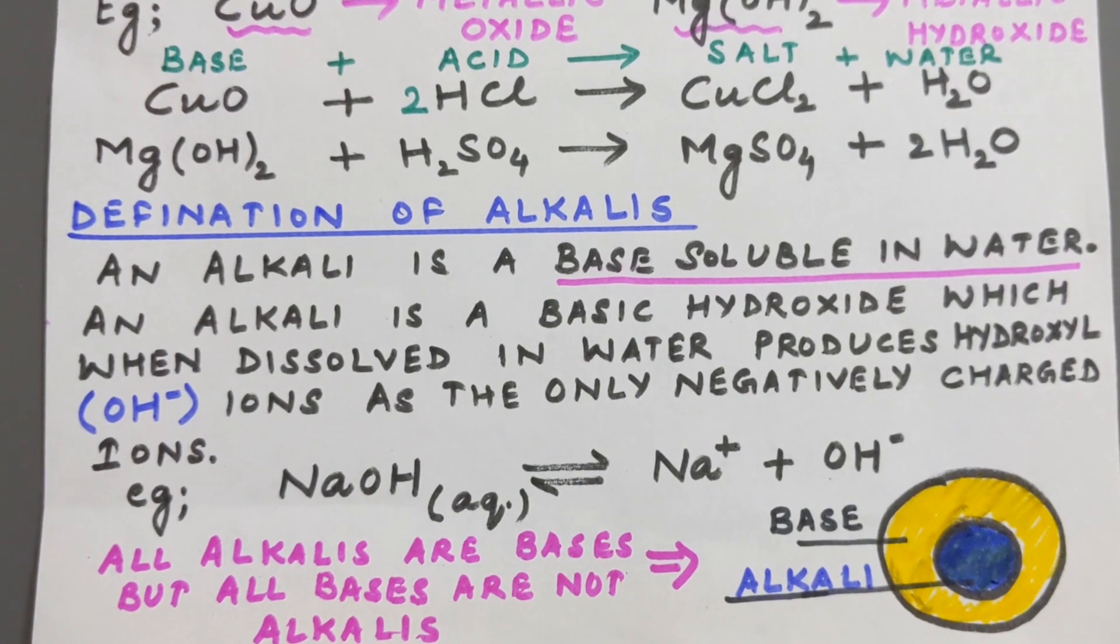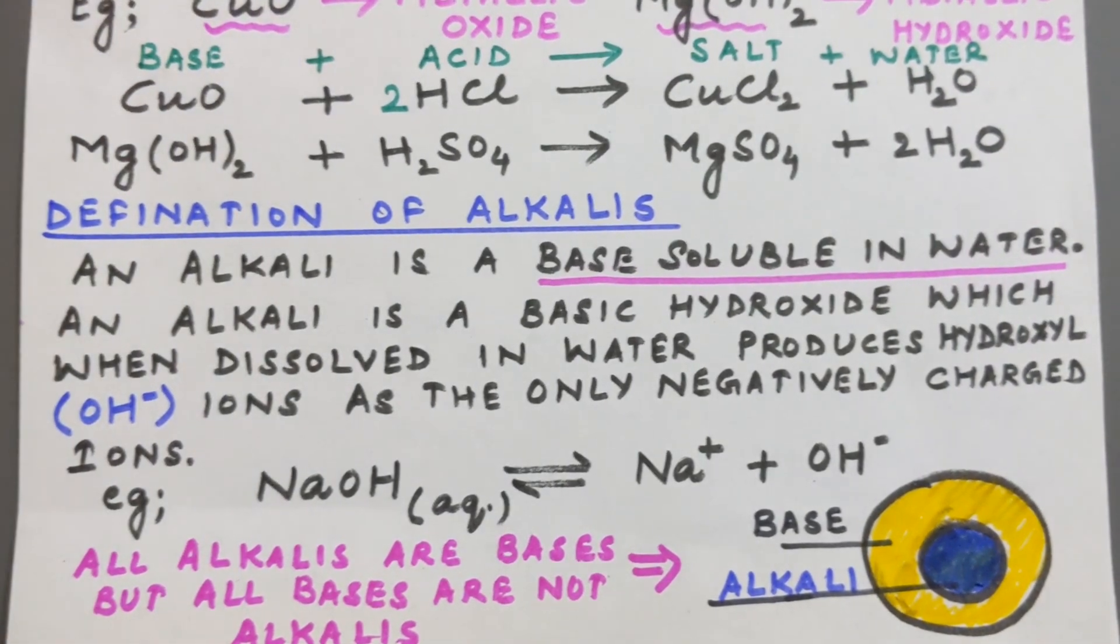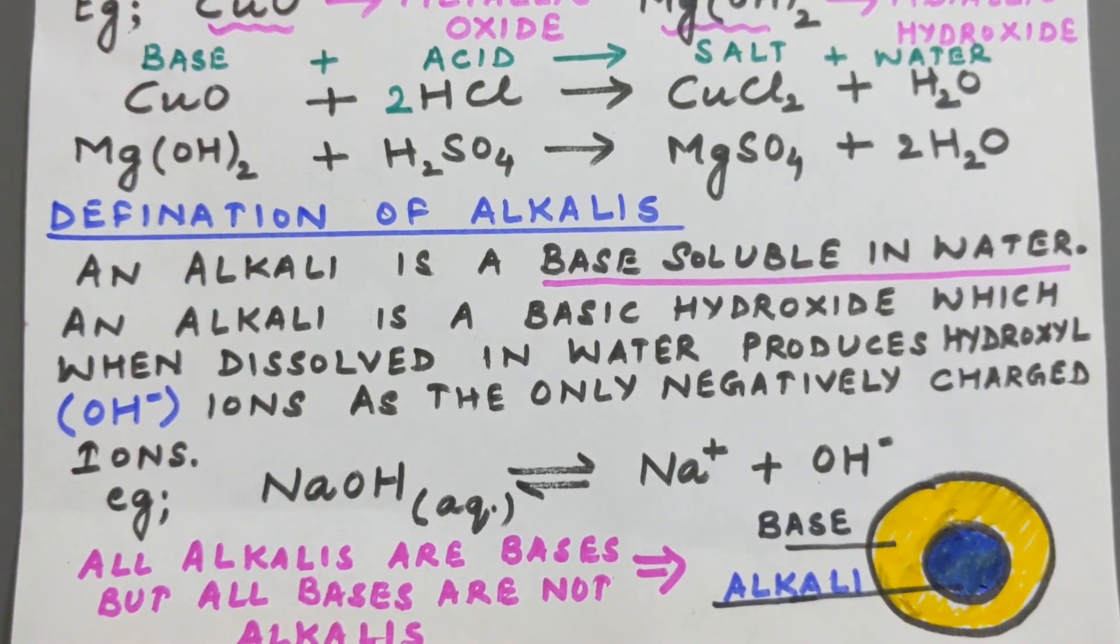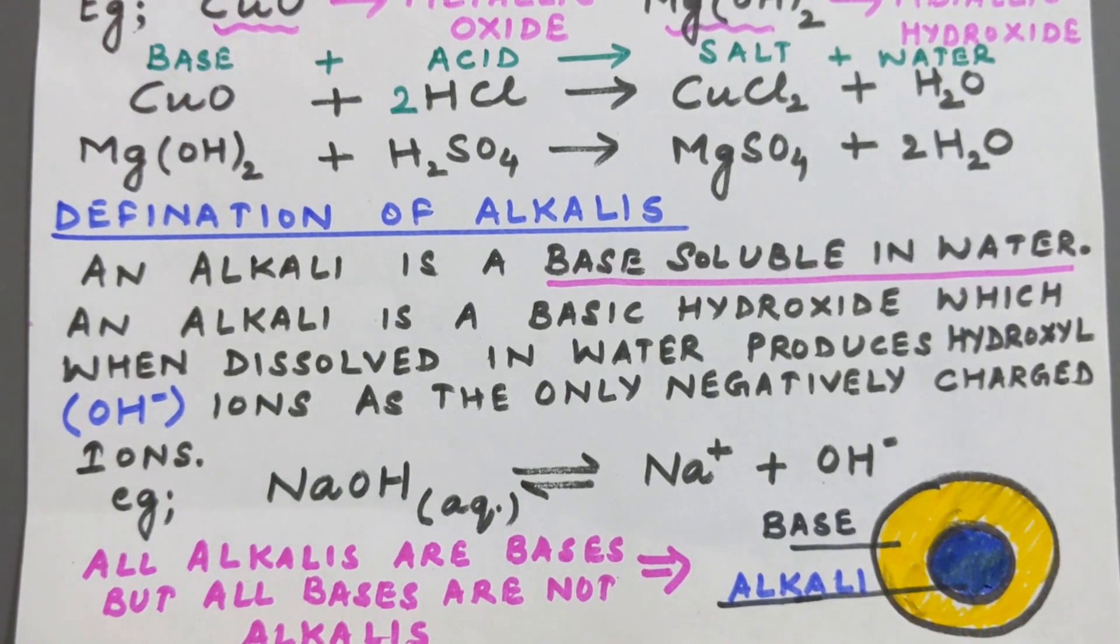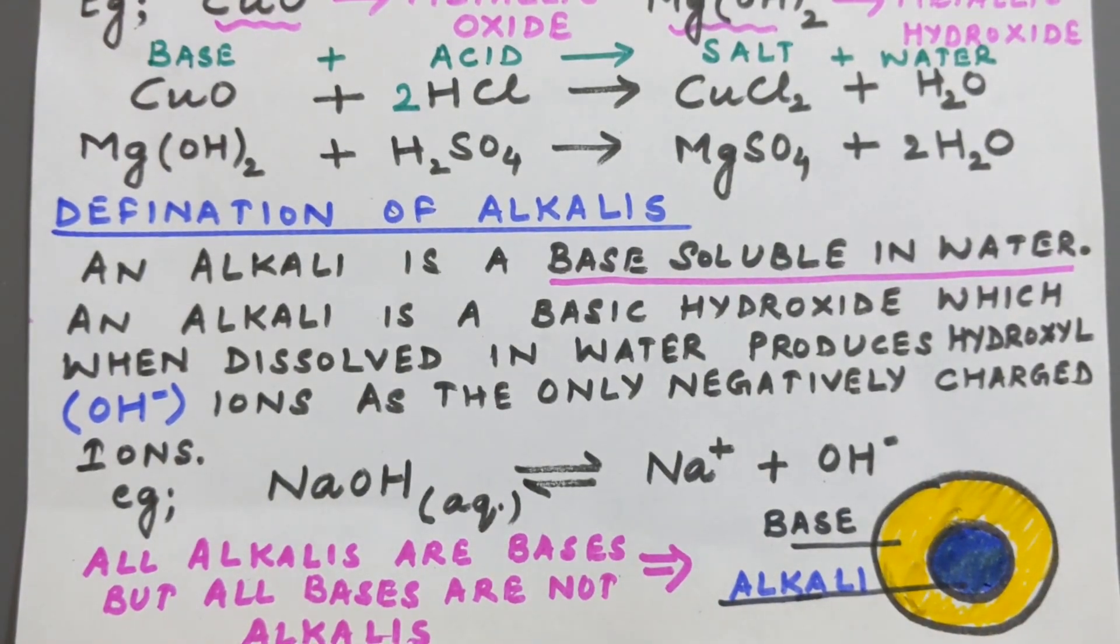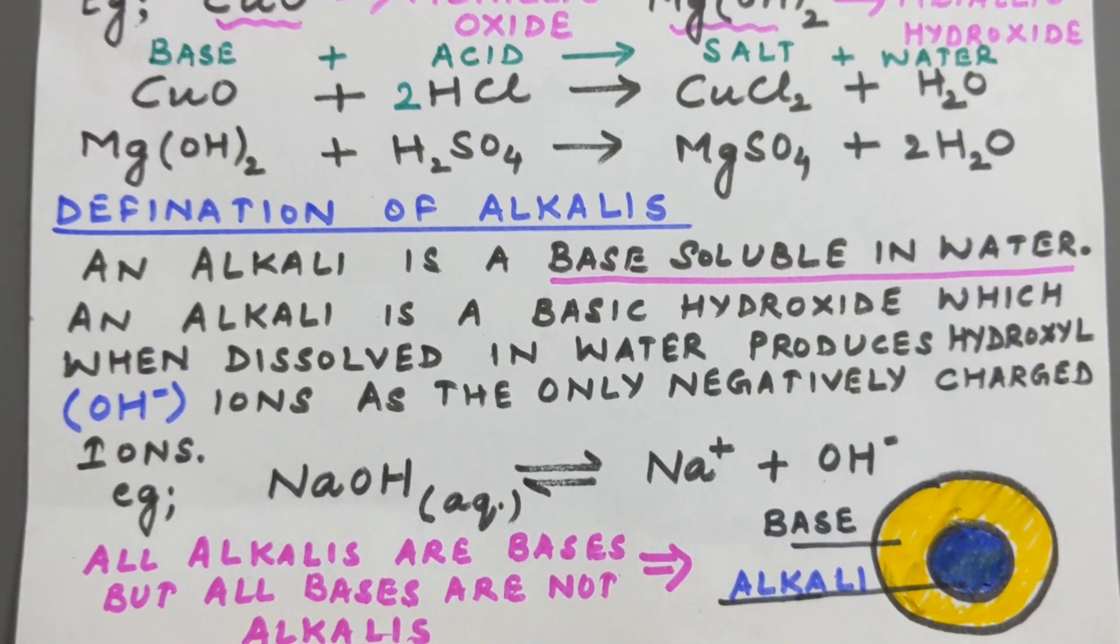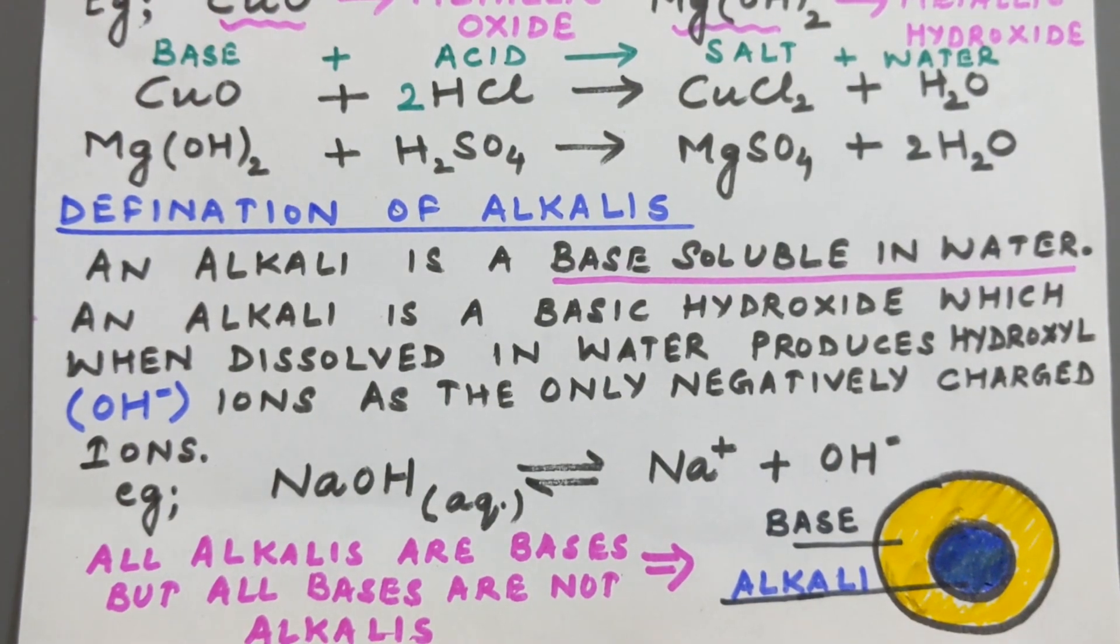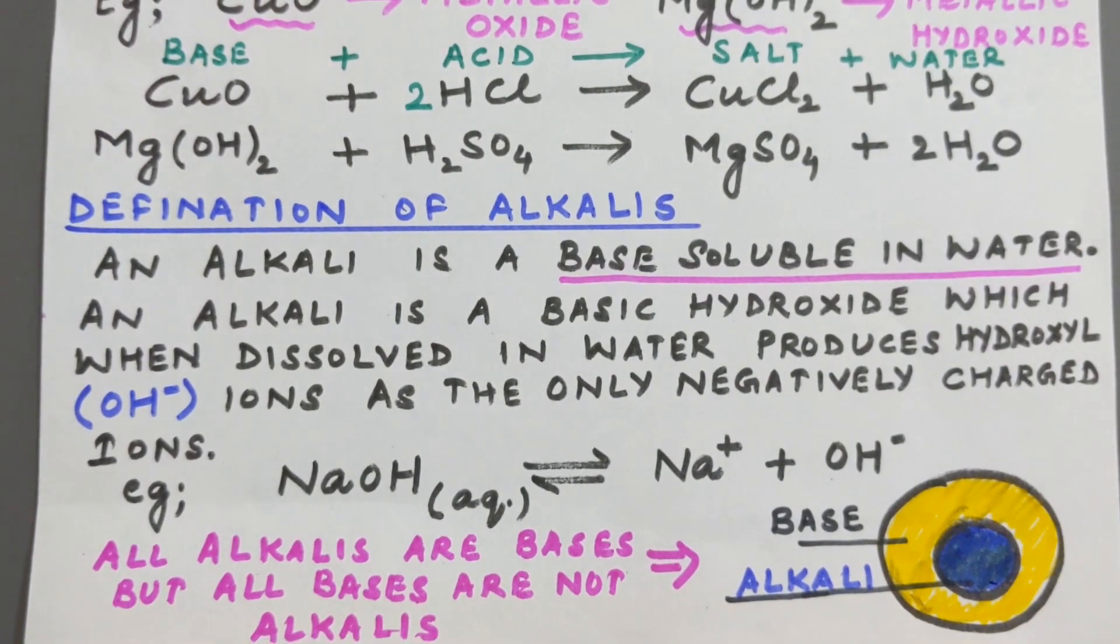Or we can define an alkali as a basic hydroxide which when dissolved in water produces hydroxyl ion, OH negative ions, as the only negatively charged ion. Now please remember whenever we dissolve bases in water, they produce hydroxide ion.